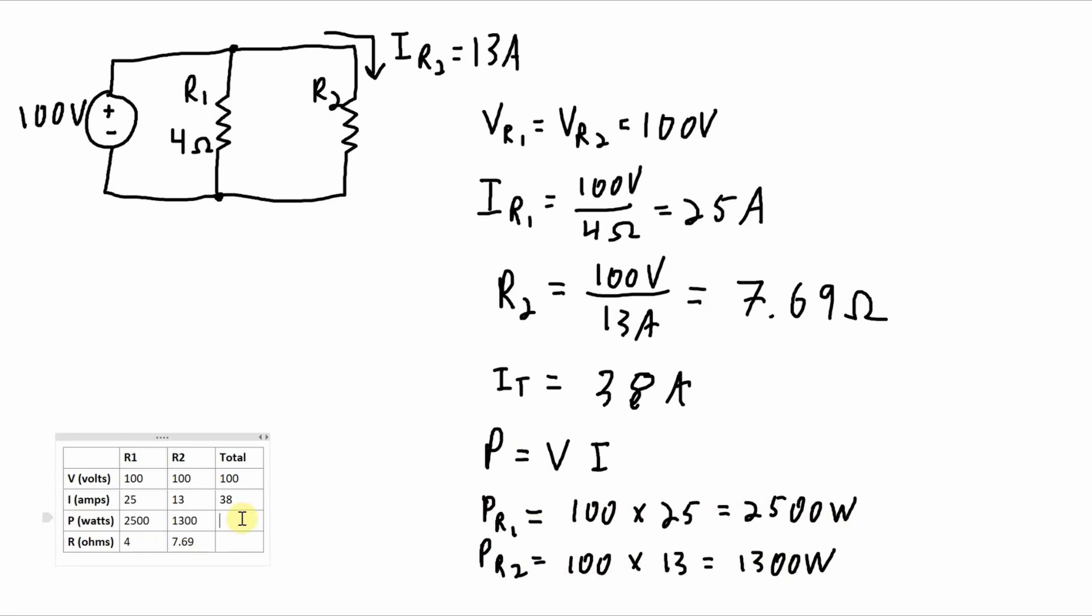Total power that needs to be output from the source has to equal the power dissipated by R1 plus R2. 2,500 plus 1,300 gives me 3,800 watts. And one final thing we haven't figured out. Total resistance, since they're in parallel. 1 over 4 plus 1 over 7.69 to the minus 1.